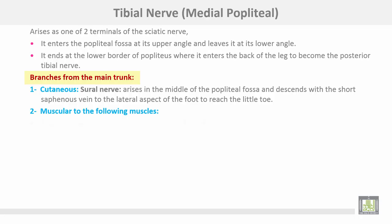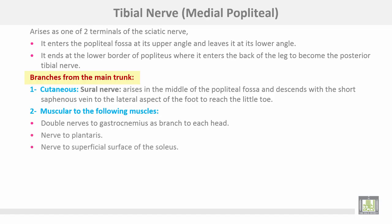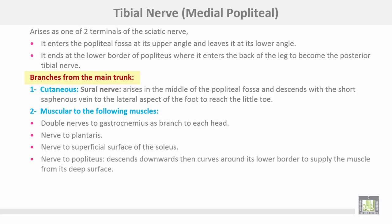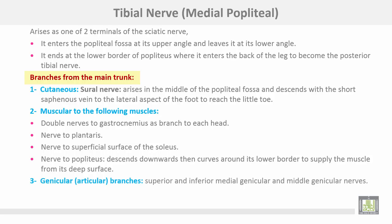Muscular branches of the tibial nerve include: double nerves to gastrocnemius (a branch for each head), nerve to plantaris muscle, nerve to the superficial surface of soleus muscle, and nerve to popliteus which descends downward then curves around its lower border to supply the muscle from its deep surface. Genicular branches include superior and inferior medial genicular and the middle genicular nerve.